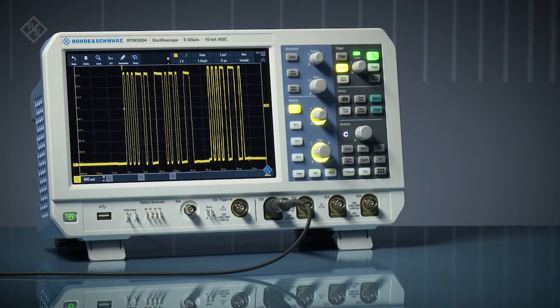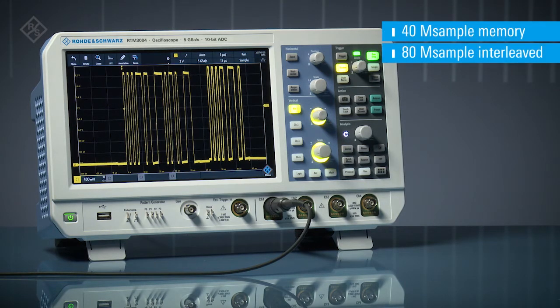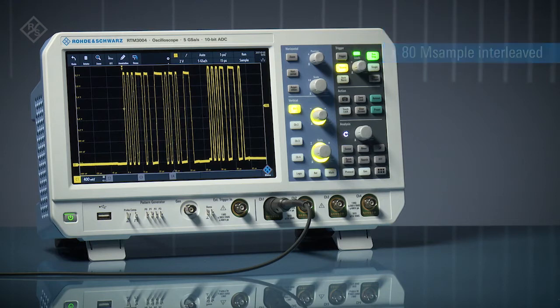Rohde & Schwarz RTM 3000 Series Oscilloscopes feature a standard acquisition memory of 80 mega-sample. Why is deep memory important? For short times, even scopes with small memory depths retain sufficient sample rate and show important signal detail.